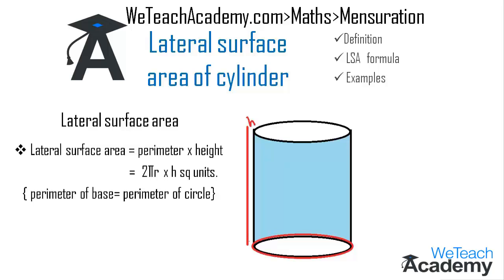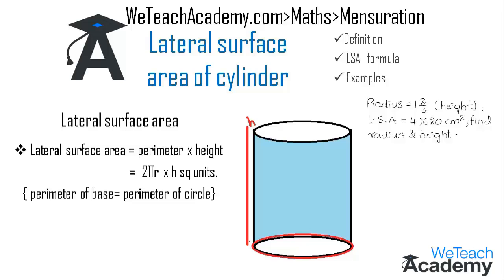Now let me explain a few examples. The first example: if the radius of the base of the cylinder is 1 and 2/3 of the height of the cylinder and the lateral surface area is equal to 4620 cm², then find the radius and height. Given r = (5/3)h, let us assume height equals h, so radius equals 5h/3.